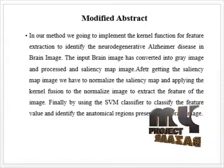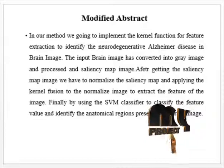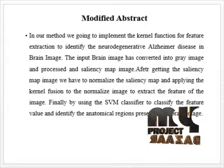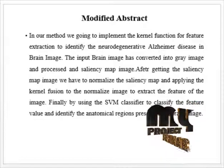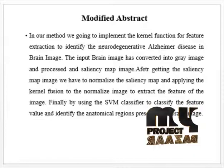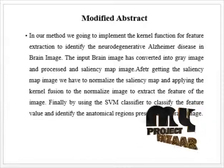After extracting the image features, we use the SVM classifier to classify the feature values and identify anatomical regions. These processes are bottom-up and top-down information processes. Bottom-up information comes from a multi-scale analysis for different image features, while the top-down stage includes learning fusion strategies formulated as maximum margin multiple kernel optimization problems.